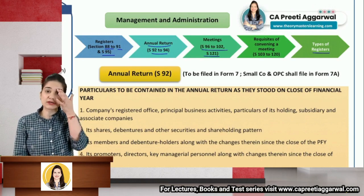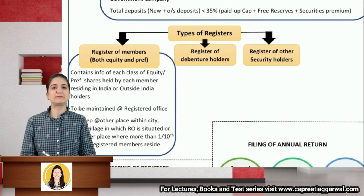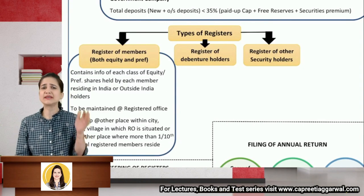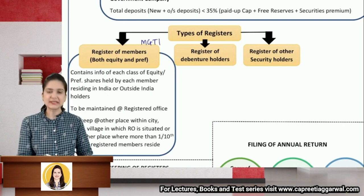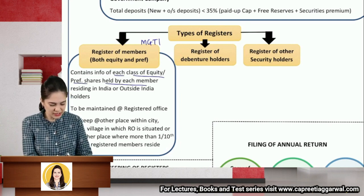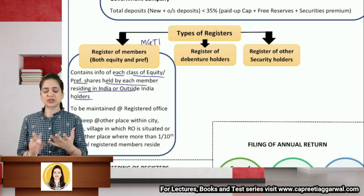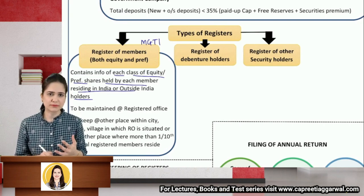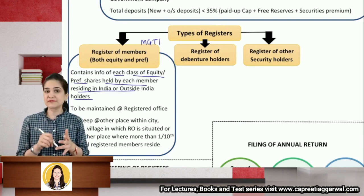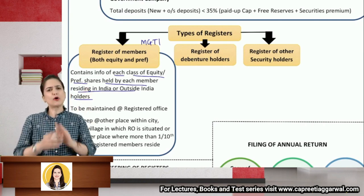This chapter contains provisions relating to conducting meetings, various registers to be maintained, and requirements for a valid meeting. Every company must maintain a register of members — whether they stay in India or outside India — under MGT-1. It contains information on each class of equity and preference shares held, showing India and overseas members separately, along with name, address, occupation, number of shares held, shares transferred, date of transfer, and face value.